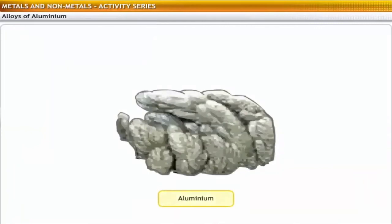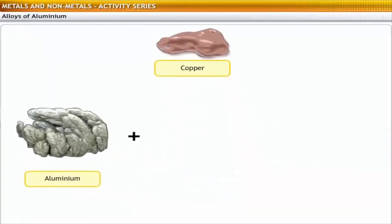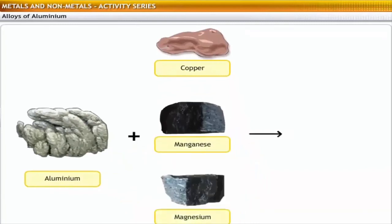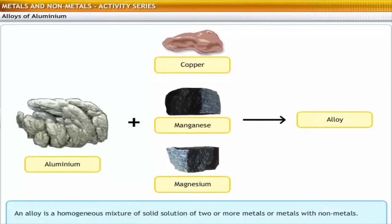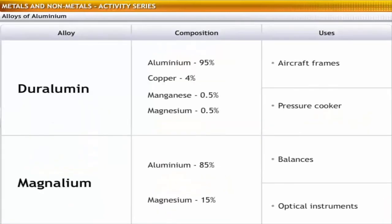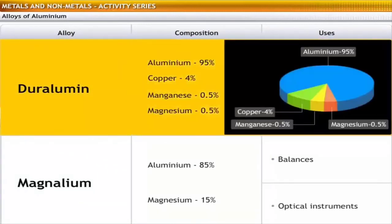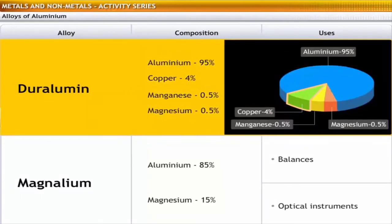Extracted aluminium in combination with other metals like copper, manganese and magnesium forms alloys. An alloy is a homogeneous mixture or solid solution of two or more metals, or metals with non-metals. Duralumin is a light and tensile alloy of aluminium, composed of 95% aluminium, 4% copper, 0.5% manganese, and 0.5% magnesium.